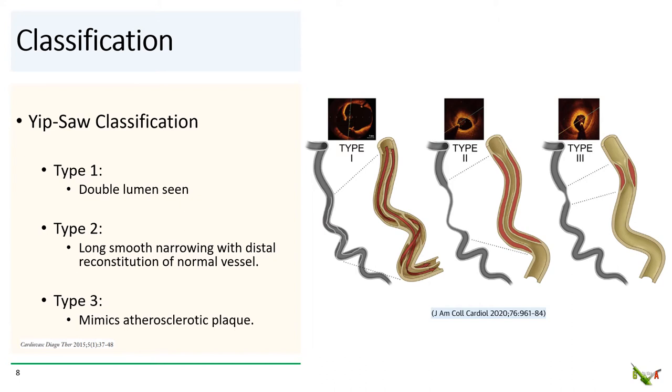Type 3 is essentially a short version of type 2, and is often angiographically indistinguishable from atherosclerotic plaque.